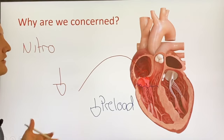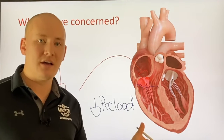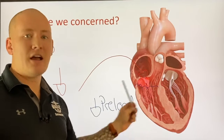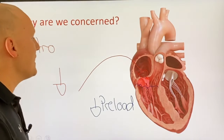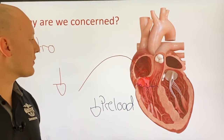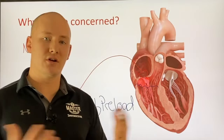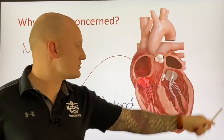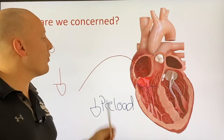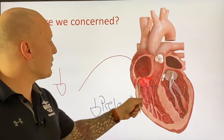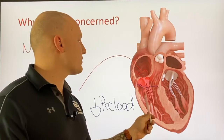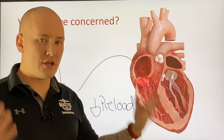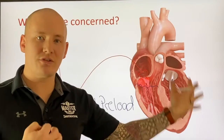Why is that a concern in inferior MIs? We know that inferior MIs often affect the right coronary artery, which ultimately affects the right ventricle itself. The theory is that we don't want to decrease preload because we already have a damaged right ventricle that can't squeeze nearly as hard, meaning we have an inability to push blood towards the lungs. So our concern is that if we decrease preload even more through vasodilation, we ultimately decrease the fluid that can be pushed by that right ventricle — but ultimately, this is just a theory we've been teaching for years.